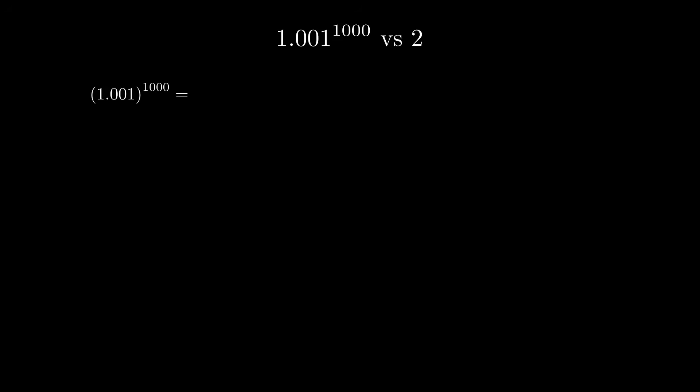Our journey begins with the number 1.001 raised to the 1,000th power. This modest number, slightly above 1, when compounded upon itself a thousand times, grows beyond your initial expectations. As we delve into this expression, we can see that 1.001 can be written as 1 plus 1 over 1,000.